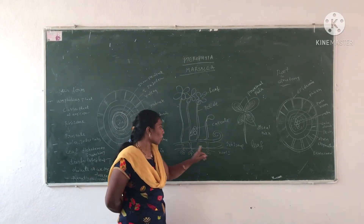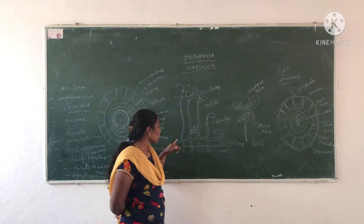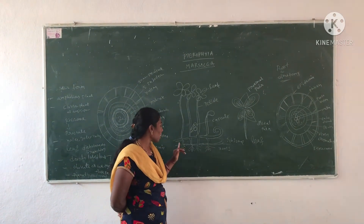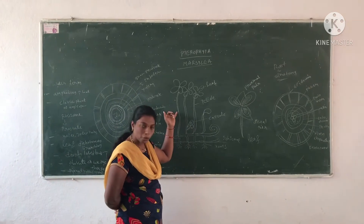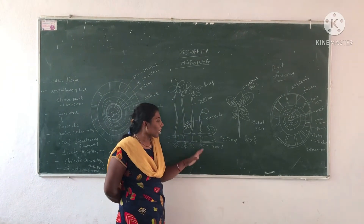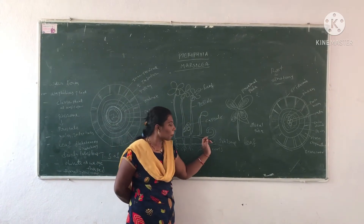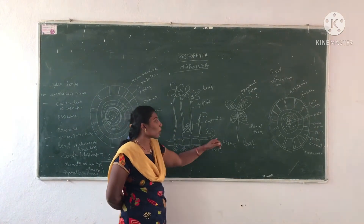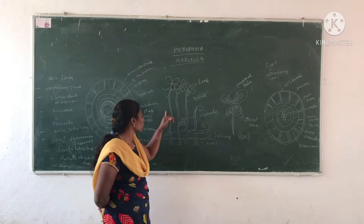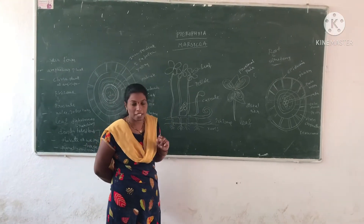The underground rhizome of Marsilea is arranged with parallel roots. This rhizome is differentiated into nodes and internodes. Each nodal part — the upper portion produces the petiole of the leaf, and the lower portion produces tap roots. These roots are used for absorption of water. The rhizome is prostrate and runs underground. The nodal part produces the aerial petioles — these are long petioles, which is one special character.